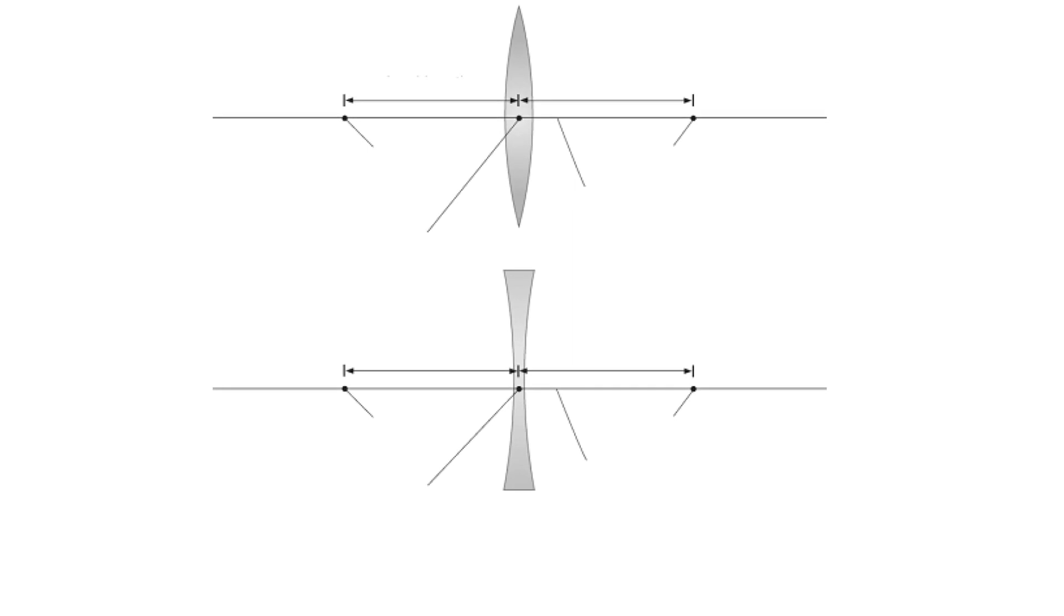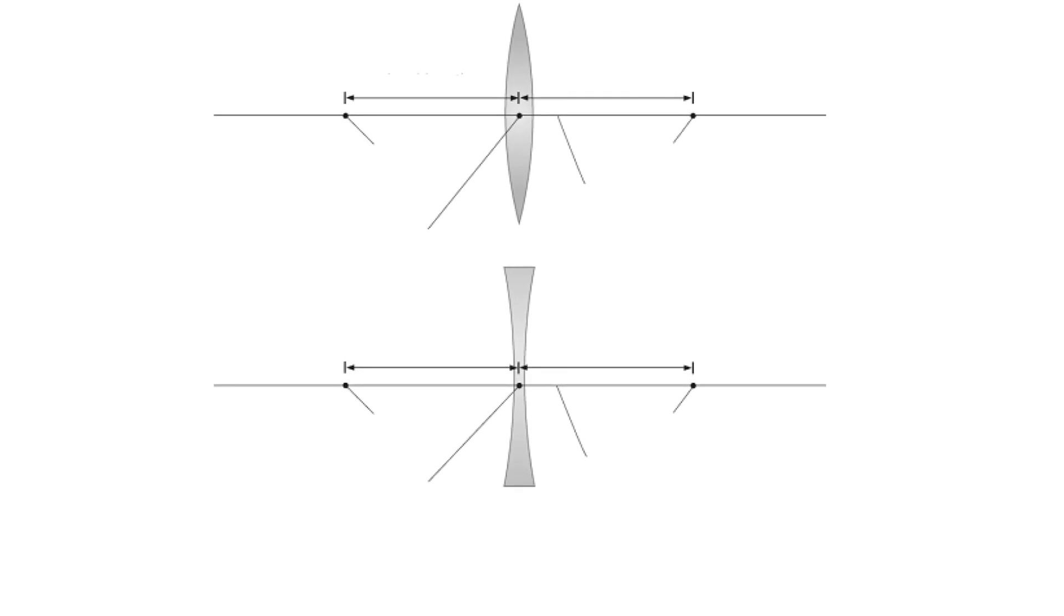Before we complete the table, let's consider this figure. We have to know some names in order to simplify our discussions. Here you can see that there are figures of two lenses, the convex lens and the concave lens.